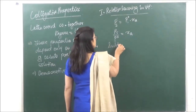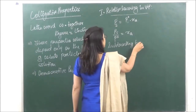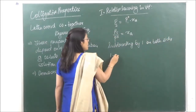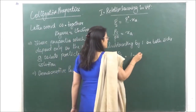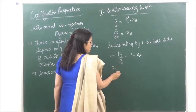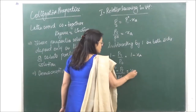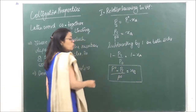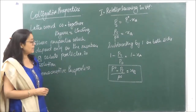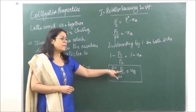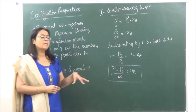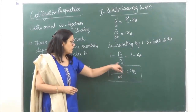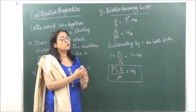Subtracting both sides from 1: 1 − Ps/P naught = 1 − xA, which gives us (P naught − Ps) / P naught = xB. Here, (P naught − Ps) is the lowering in vapor pressure, and the full expression (P naught − Ps) / P naught is the relative lowering in vapor pressure.